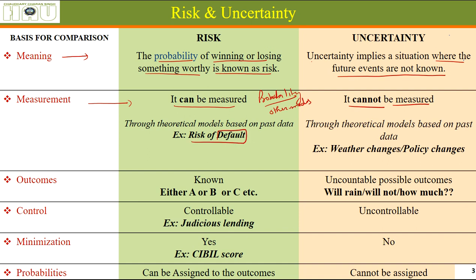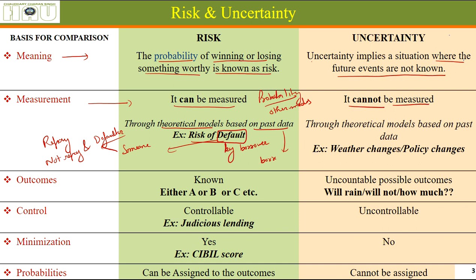For example, consider the risk of default of a loan — default means non-payment of a loan by a borrower. We can measure the chance that a borrower will repay or become a defaulter using theoretical models based on past data of earlier borrowers, identifying particular characteristics of those who repaid and those who didn't, then fitting the new borrower's details to estimate the probability of repayment.